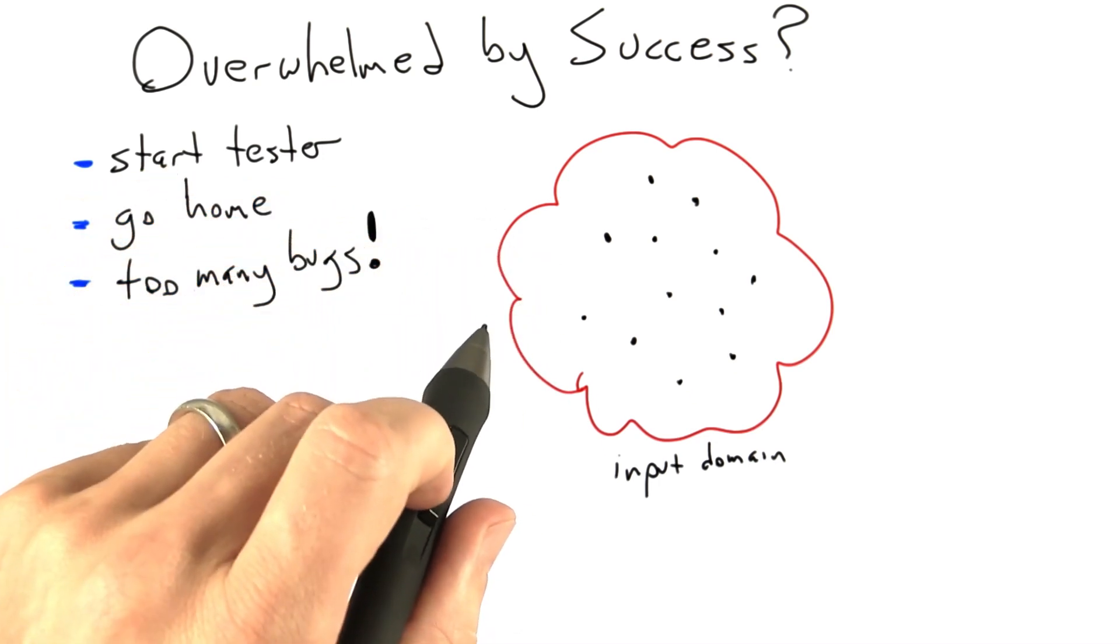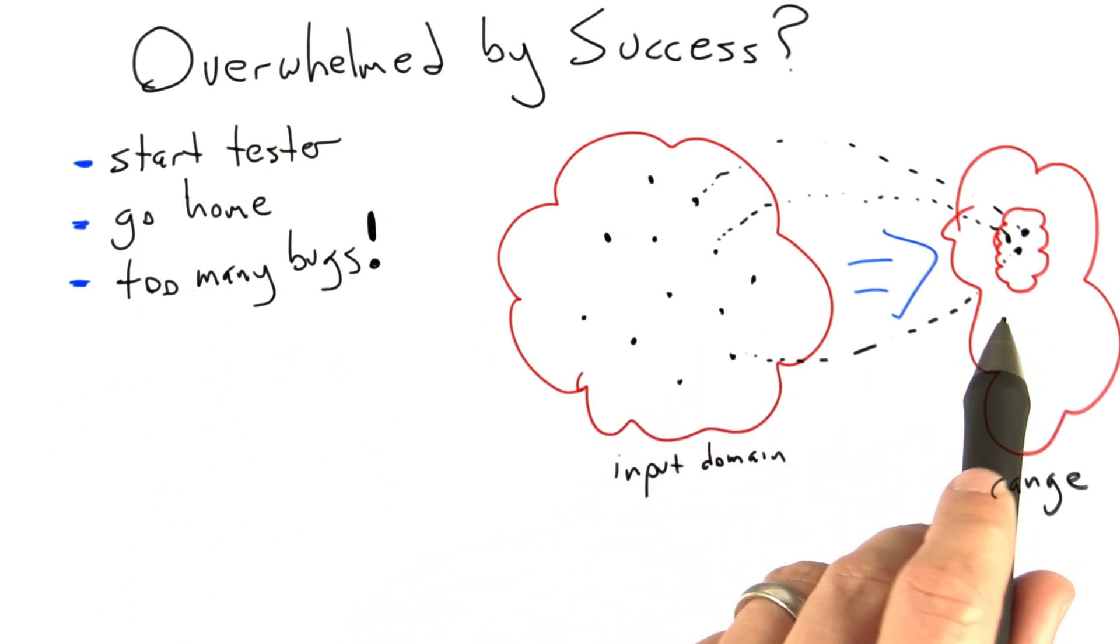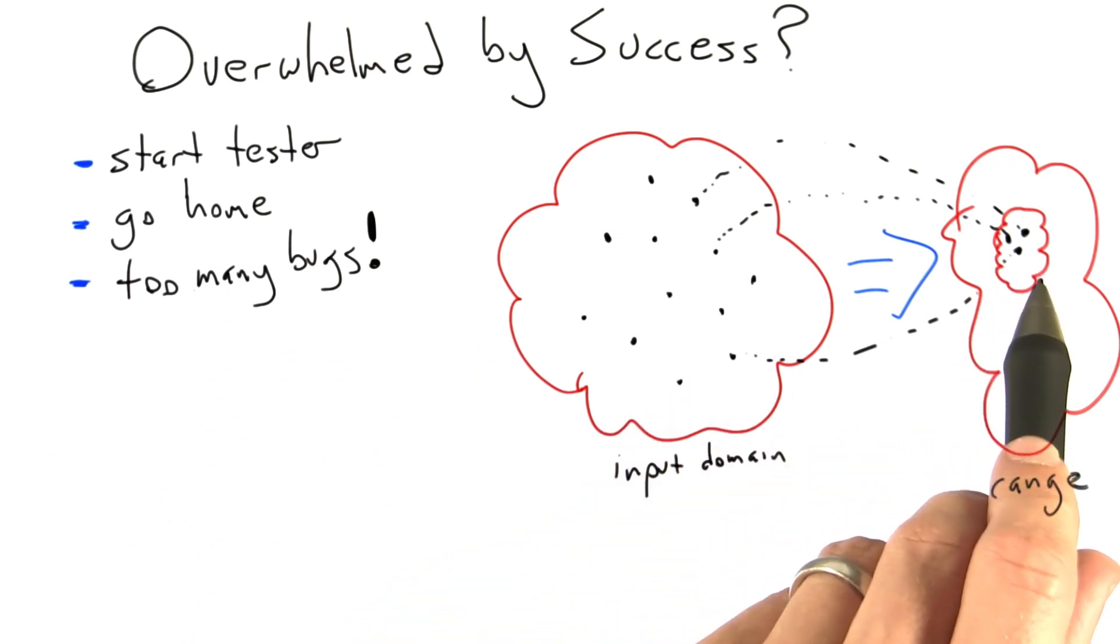Now what we have is a fundamental quandary, which is the question: do we have 250 test inputs that all, for one reason or another, all happen to map to the same buggy output?